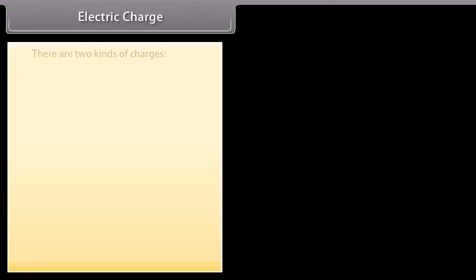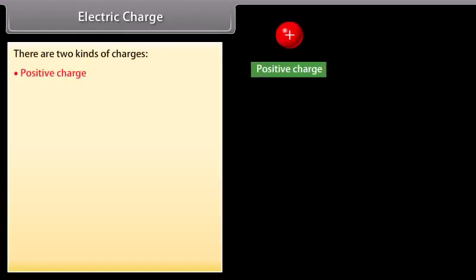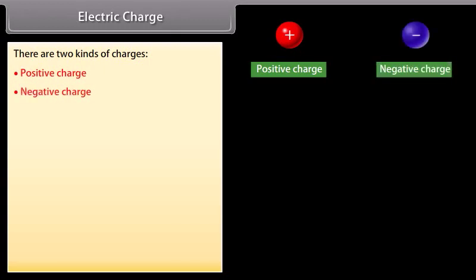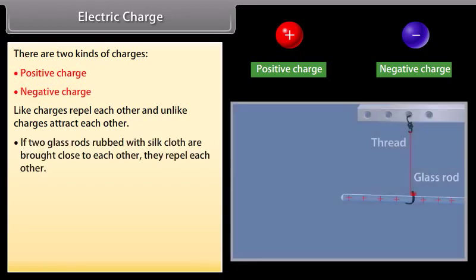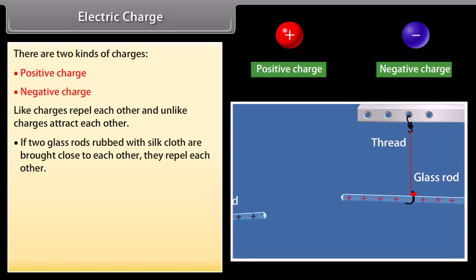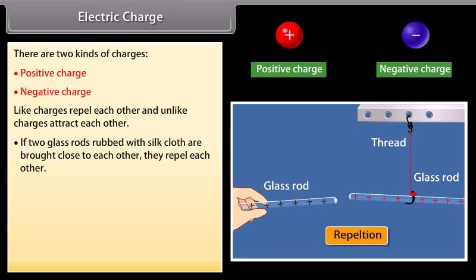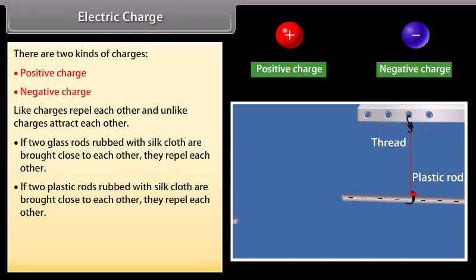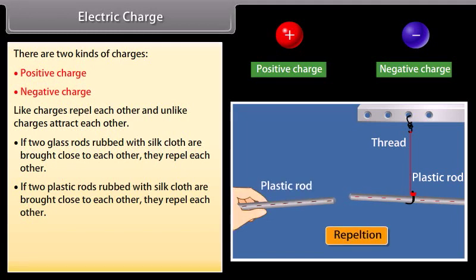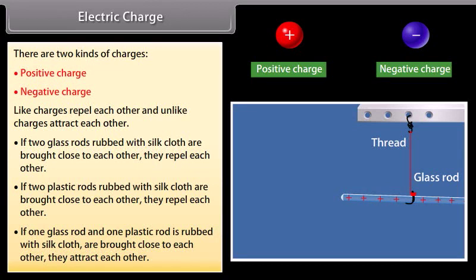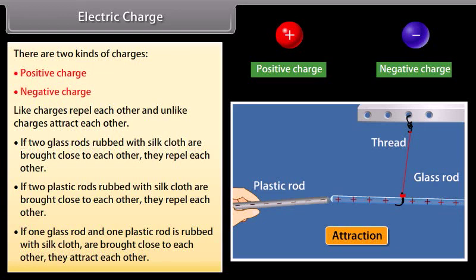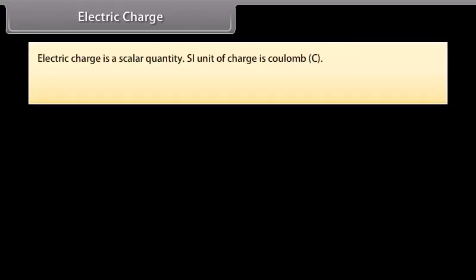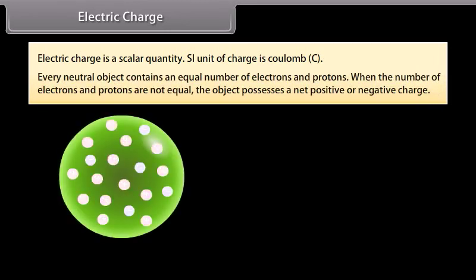Electric charge: there are two kinds of charges — positive charge and negative charge. Like charges repel each other and unlike charges attract each other. If two glass rods rubbed with silk cloth are brought close to each other, they repel each other. If two plastic rods rubbed with silk cloth are brought close to each other, they repel each other. If one glass rod and one plastic rod rubbed with silk cloth are brought close to each other, they attract each other.